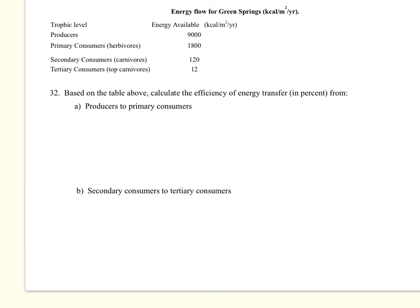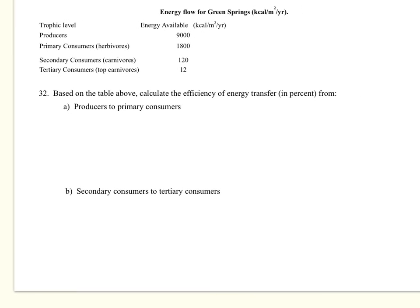So now we need this table here. And based on the table above, calculate the efficiency of energy transfer. So we know on average 10% gets transferred from one trophic level to another. So 90% is lost. But that's an average. It's not an absolute. So sometimes it's higher or lower than that. So we want to know from producers to primary consumers. So our producers here are at 9,000. And our primary consumers are at 1,800.